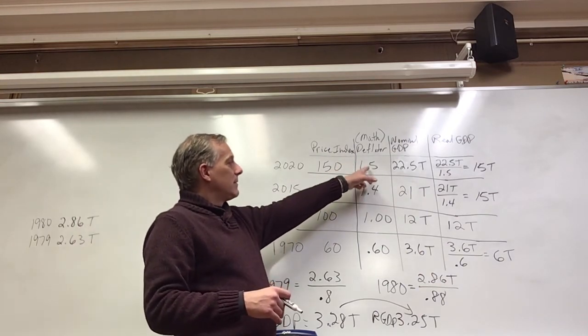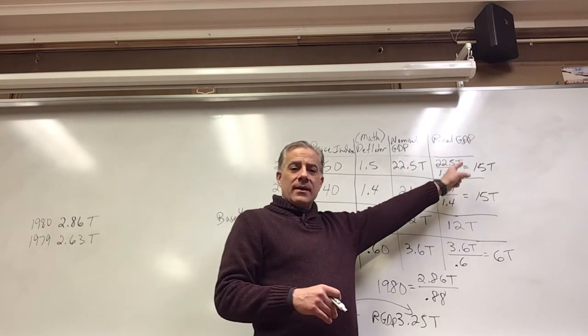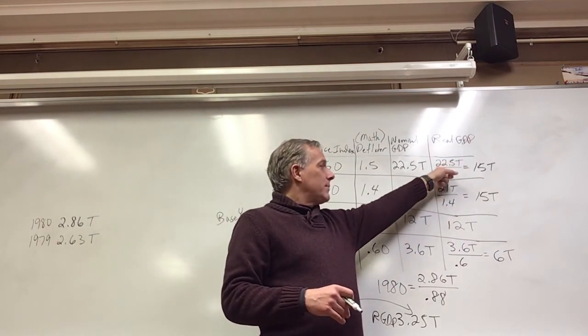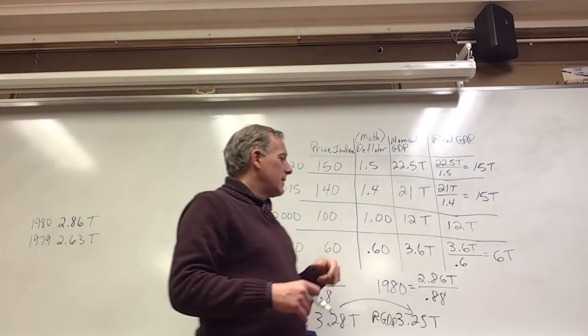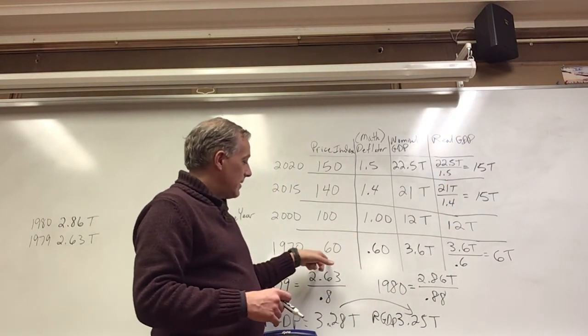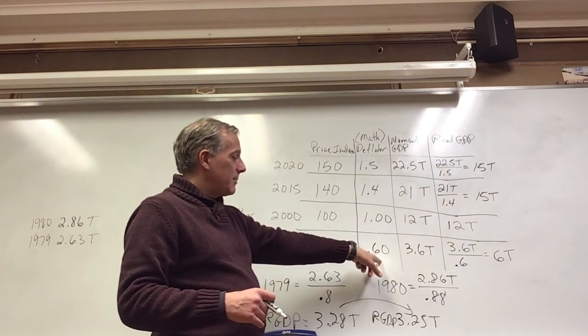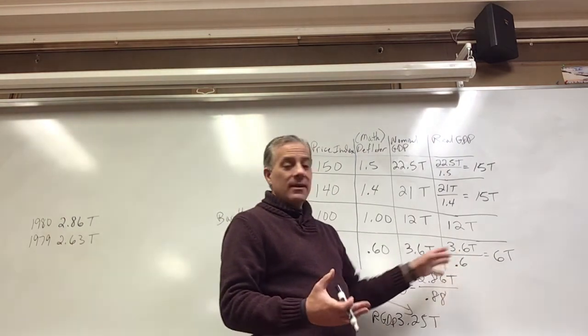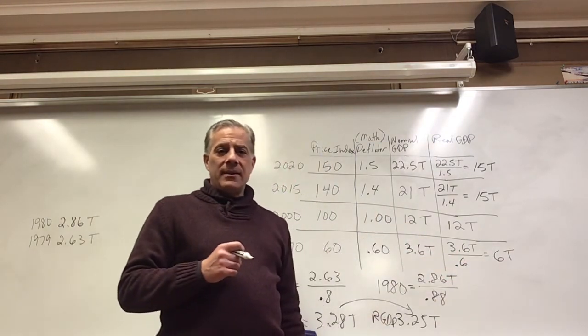Price index, deflator, nominal GDP, and then real GDP is the nominal divided by the deflator. As we go into the past, past the base year, the numbers going below 100, when we divide by those, the real GDP will actually be greater than the nominal GDP.